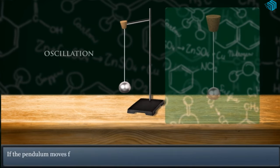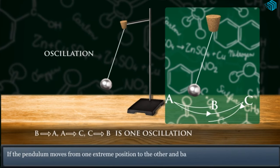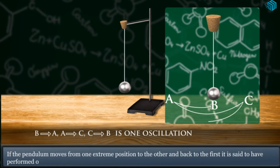If the pendulum moves from one extreme position to the other and back to the first, it is said to have performed one oscillation.